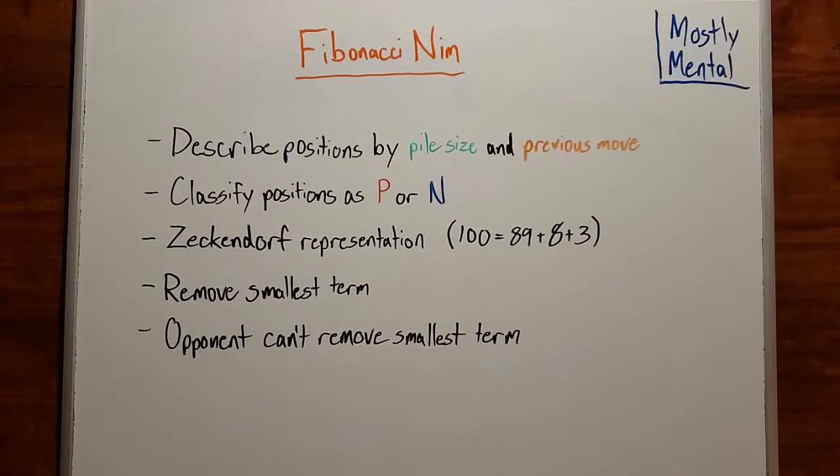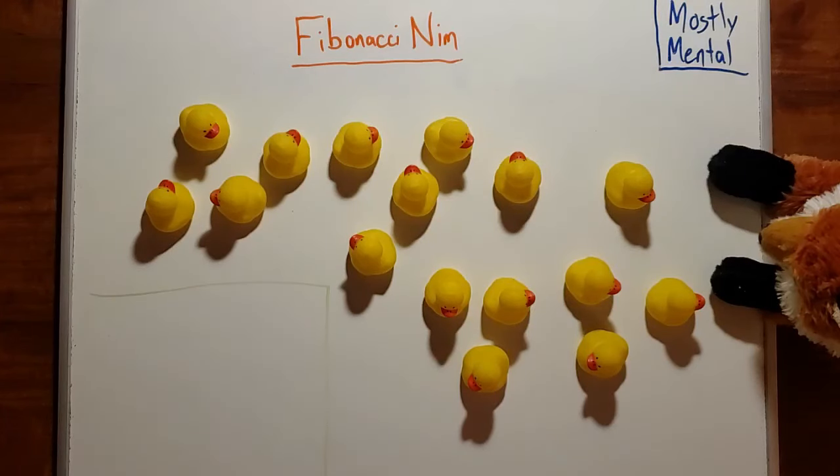And if the opponent didn't remove the smallest term, then we always could. And the winning move had to remove that smallest term, which meant we would win. So we've fully described a winning strategy for Fibonacci Nim. Time to put it all together and challenge Aurora to a rematch.